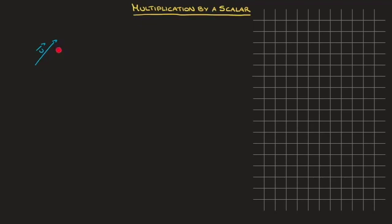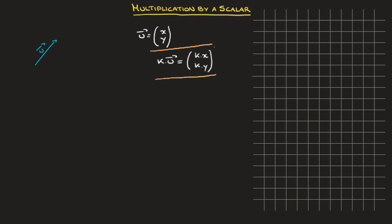Let's see how to multiply a vector by a scalar — in other words, how to multiply a vector by a real number. I'll start by getting the formula out of the way. Let's say we have a vector u whose components are x and y. Then if we multiply this vector by some number, which I'll call k — in other words, if we consider k times u — then that's equal to another vector whose components are k times x and k times y. I'll go ahead and box that result; do make a note of it.